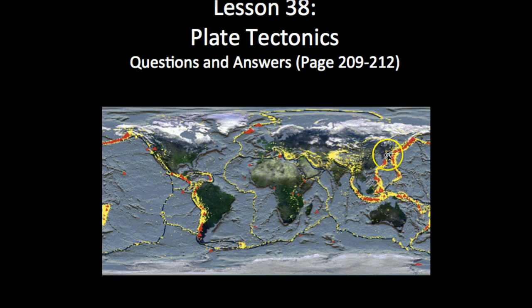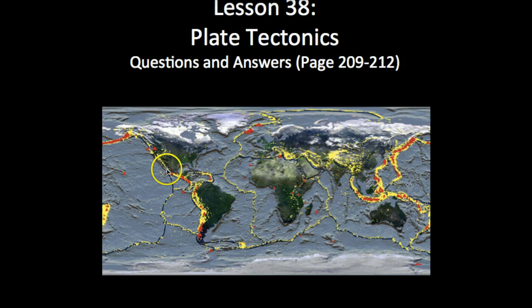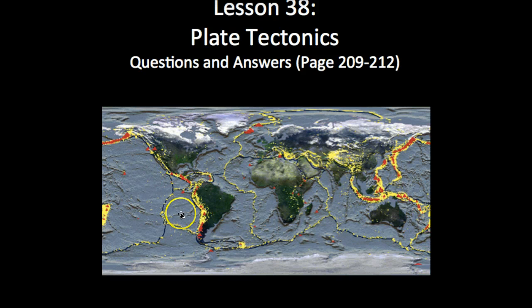In the center here, this is where we see the ring of fire. If this wasn't cut in half, we would see a ring of all this yellow and red — that's what we call the ring of fire on the Pacific plate. You can see we have a lot of earthquakes but not many volcanoes in California. This is where the plates meet.